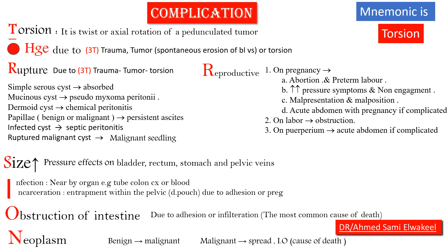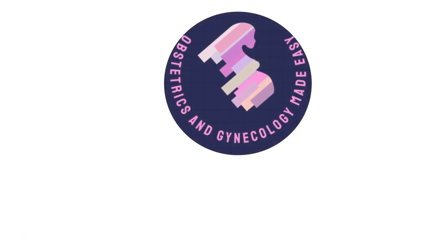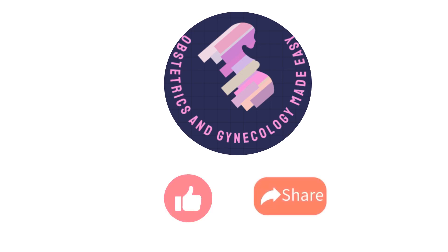N for neoplasm — if the ovarian neoplasm is benign, it may turn malignant; if it is already malignant, it leads to spread or intestinal obstruction. I hope this helps — please don't forget to like and share.